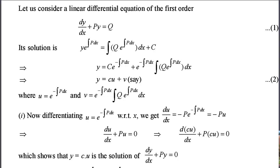Let us consider a differential equation of first order. It is of a linear type. Hence, it is a first order derivative and it has only one variable x: dy/dx plus py equal to q. The complete solution will take the form y is equal to cu plus v, where u is e to the power of minus integral p dx, and v is e to the power of minus integral p dx into integral of q e to the power integral p dx, dx.